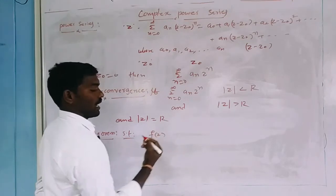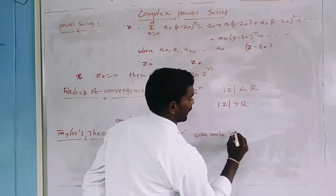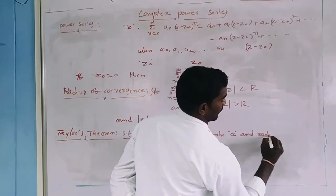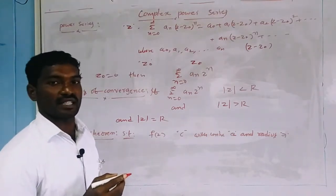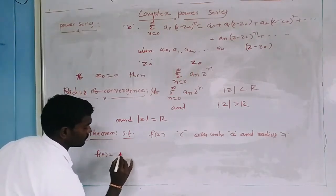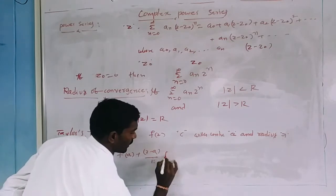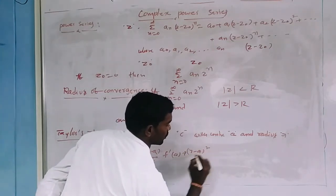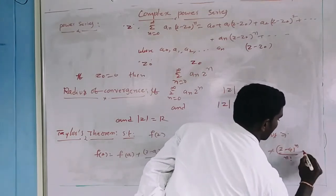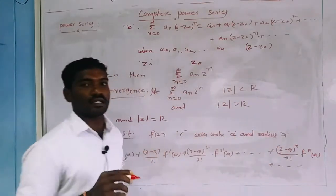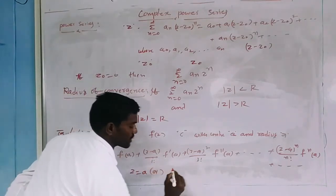Statement of Taylor's theorem: If F of Z is analytic inside a circle C with center A and radius small r, and Z is any point inside C, then F of Z equals F of A plus Z minus A by 1 factorial into F-dash of A, plus Z minus A whole square by 2 factorial into F-double-dash of A, plus and so on, plus Z minus A whole power n by n factorial into the n-th derivative of A, plus and so on. This is known as the Taylor series expansion of F of Z about the point Z equals A, or in powers of Z minus A.